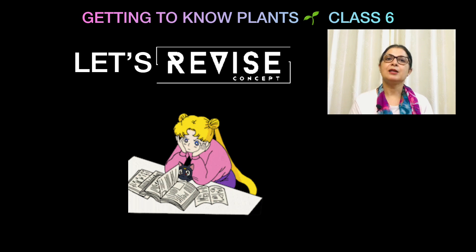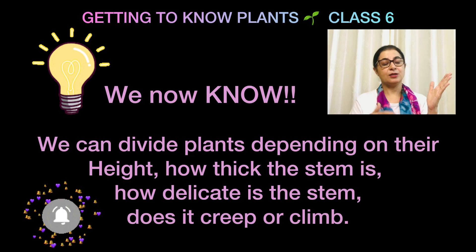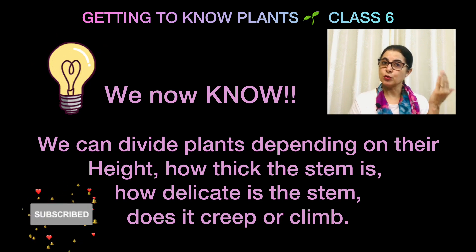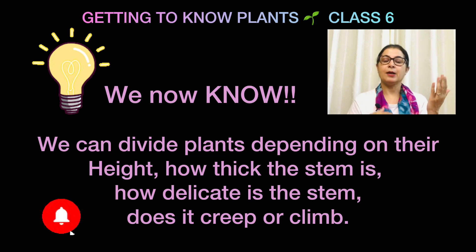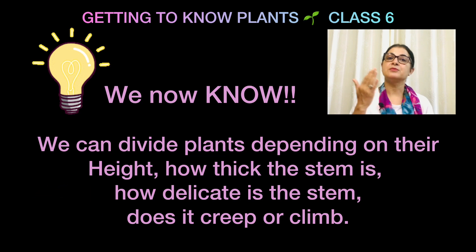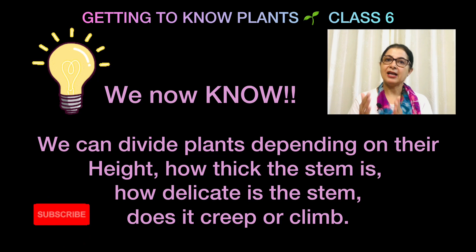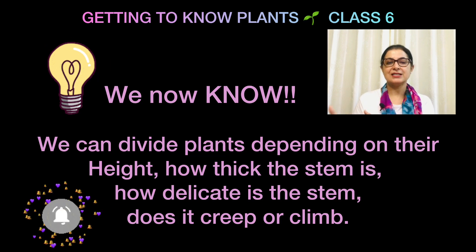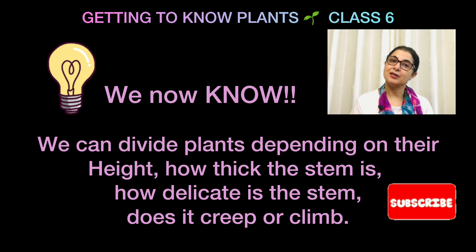So there are different groups of plants depending on different criteria. First, plants that can stand erect — divided by height and stem thickness into herbs, shrubs, and trees. Then there are plants which cannot stand erect, and they are further divided into two categories: creepers and climbers. Now you all must be absolutely clear on what we mean by herbs, shrubs, trees, creepers, and climbers.